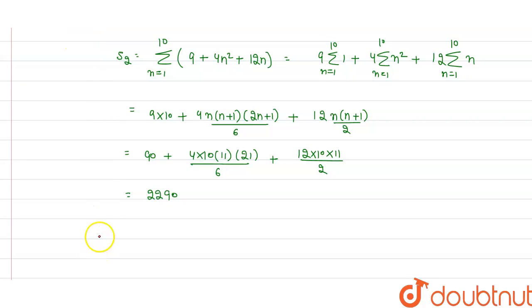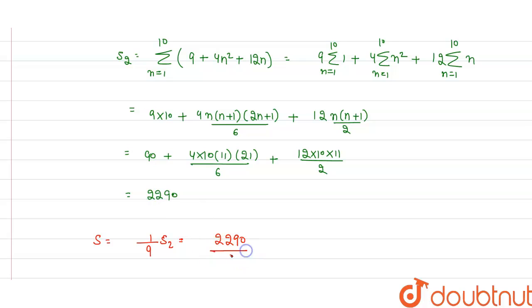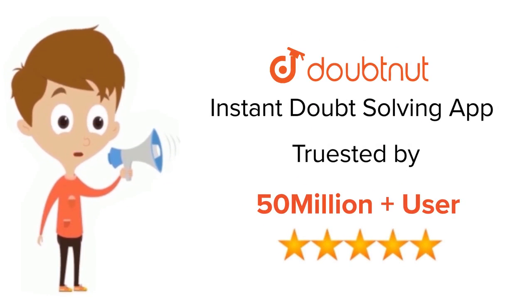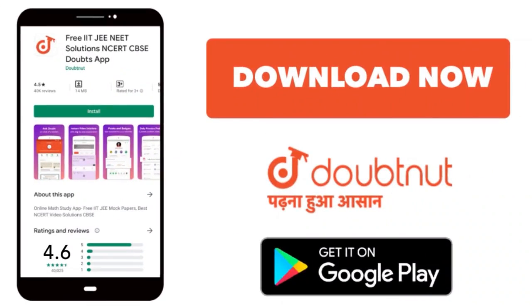So the sum S of the original series equals 1 divided by 3 squared — that is, 1/9 — multiplied by S₂. Therefore, S = 2290 divided by 9. That is the sum of the series up to 10 terms. For class 6 to 12, IIT JEE, and NEET level — trusted by more than 5 crore students — download DoubtNet today.